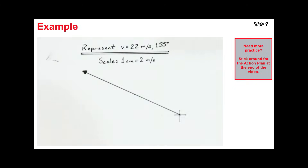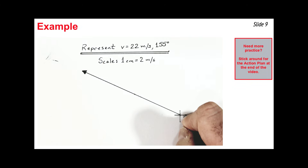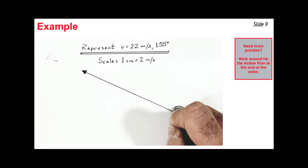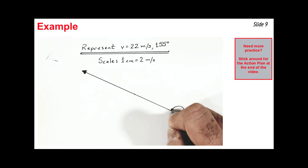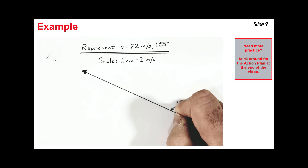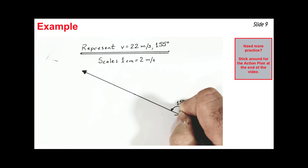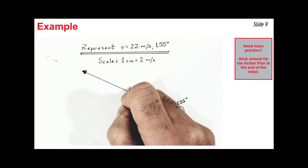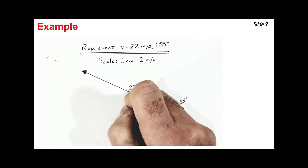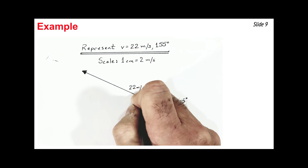I like to label my vectors — first with the direction at the tail of the vector: 155 degrees counterclockwise from East, shown on the diagram. Then somewhere along the length, I label the magnitude: 22 meters per second, the real-world magnitude of the vector.